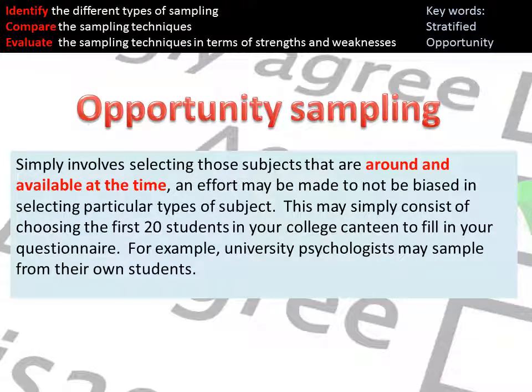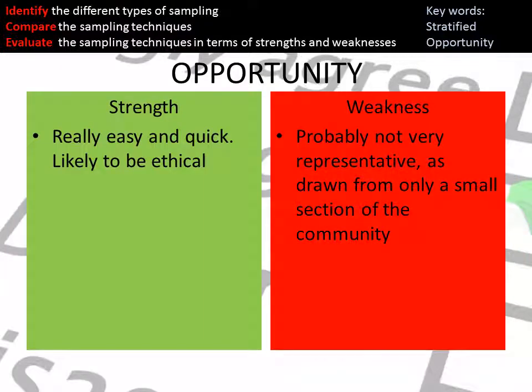Opportunity sampling is probably the most familiar technique — it involves selecting participants who are available and around you at the time, such as going into a sixth form common room and asking people if they're free to take part. It is quick and easy to carry out and is likely to be ethical, since you've asked people if they're happy to participate. However, it is not very representative, as you've only drawn from a small section of the community, limiting generalization to that specific group.